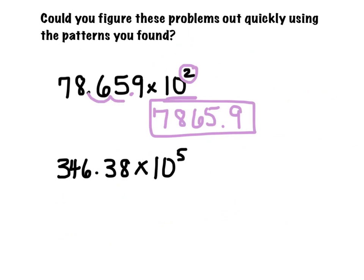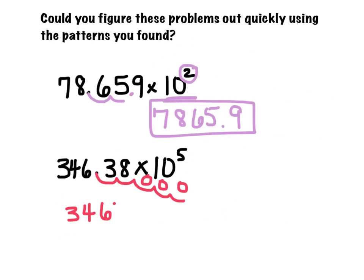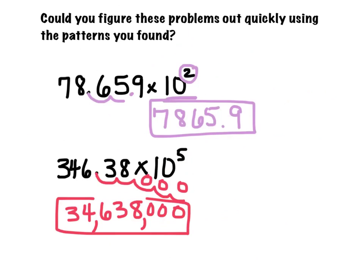So I did that without a calculator. Let's look at the second one. It says times 10 to the fifth. 10 to the fifth is going to have five zeros, so I'm going to move it over five spots. I'm going to have to put some zeros here. So my new number is 34,638,000.